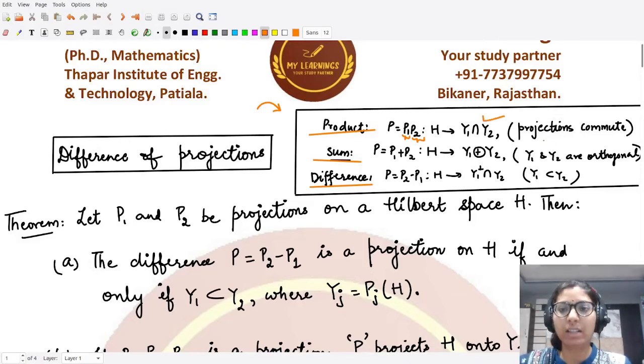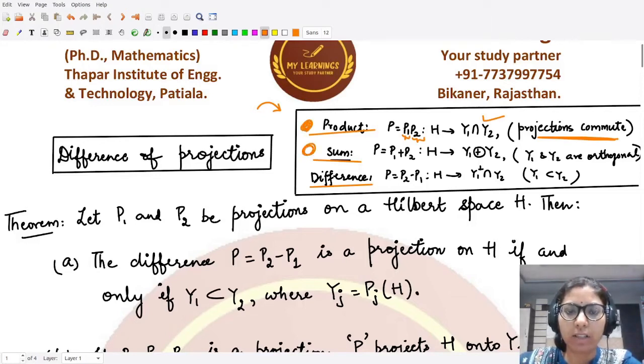Moreover, this thing would hold whenever the projections commute with each other. In case of sum of projections, whenever you have two projections P1 and P2, the sum projection would map the whole Hilbert space to the direct sum of Y1 with Y2, where the condition is that the two spaces Y1 and Y2 should be orthogonal to each other.